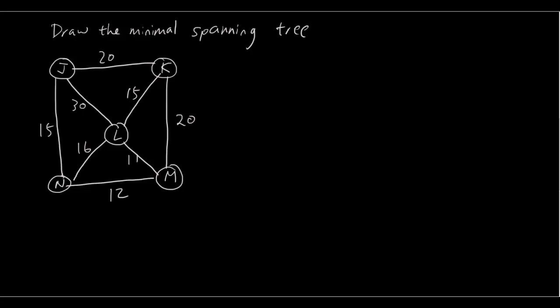Okay so follow all the steps. Firstly we're going to select a random node let's say we select J. Now the closest node to J would be N so we connect that up and then the closest to either J or N would be M so we join that up and then the closest to either J, N or M would be L so we join that up and then the closest would be K so we join that up and that is the minimal spanning tree and you can see...